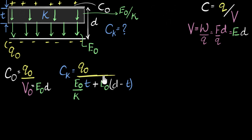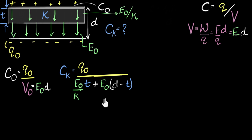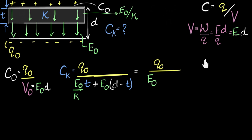As far as physics is concerned, we're done. But the answer still contains Q₀ and E₀, which I introduced — the original question had C₀. So I need to use math to rewrite CK in terms of C₀. I'll pull out a factor of E₀ and D from the denominator. That gives Q₀ divided by (E₀ × D), which is just C₀, times the bracket. Inside the bracket I have T/(KD) plus (D−T)/D.